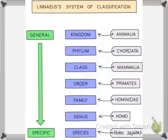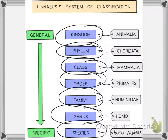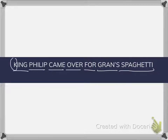The linear system of classification in order is: kingdom, phylum, class, order, family, genus, and species. To remember the order, use the mnemonic: King Philip Came Over For Grand Spaghetti — where each first letter corresponds to each level of classification.